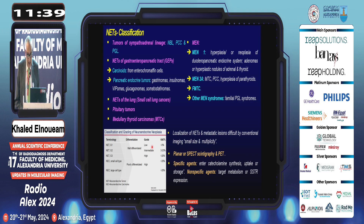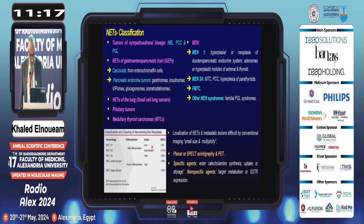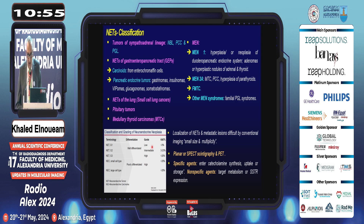Neuroendocrine tumors are broadly classified into: tumors arising from the sympathoadrenal lineage — namely neuroblastoma, pheochromocytoma, and paragangliomas; neuroendocrine tumors of the gastroenteropancreatic tract, including carcinoids and pancreatic neuroendocrine tumors such as gastrinoma, insulinomas, VIPomas, glucagonomas, and somatostatinomas; and other NETs including neuroendocrine tumors of the lung (non-small cell cancers), pituitary tumors, and medullary thyroid carcinoma. NETs are notoriously associated with syndromes: MEN1, MEN2, familial medullary thyroid carcinoma, and familial paraganglioma syndromes.